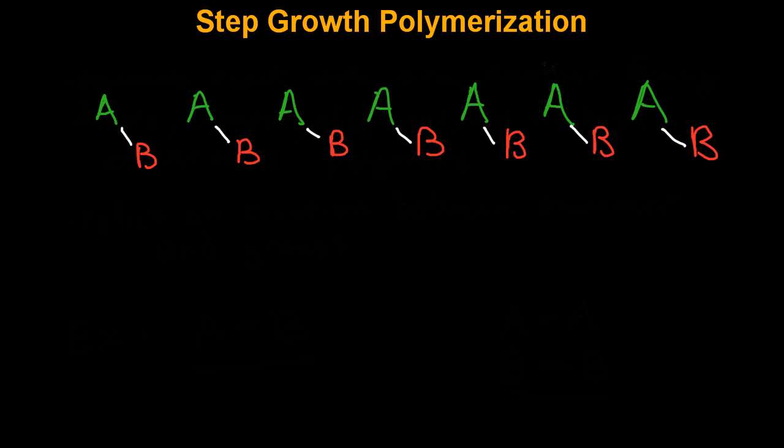In step growth polymerization, you'll have just monomer species initially. But as the polymerization progresses, you'll start forming lower molecular weight species as monomers begin to react with one another. First you'll form dimers, then trimers, oligomers, and then eventually you'll start to form polymer species.